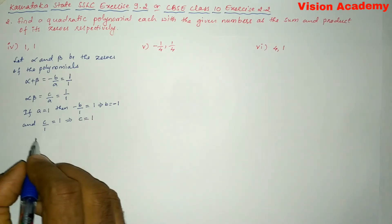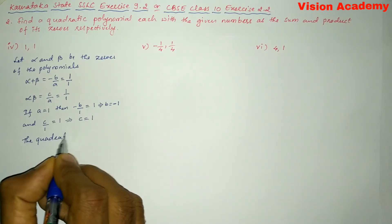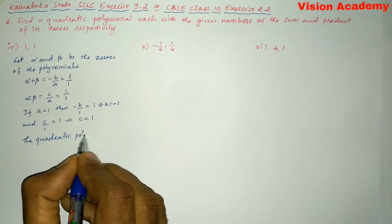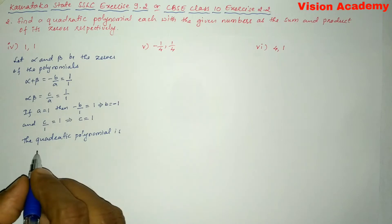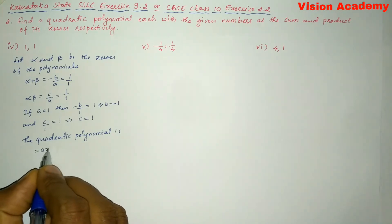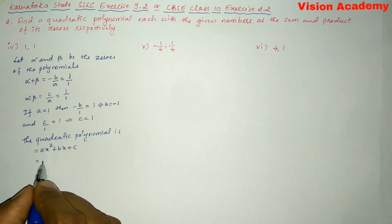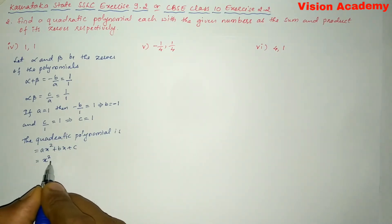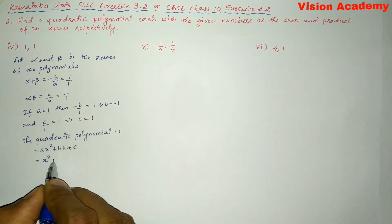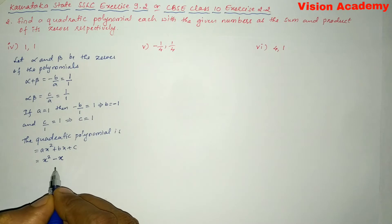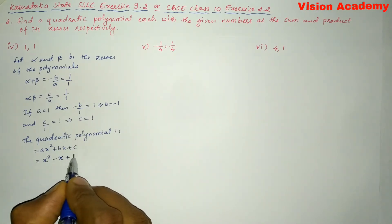Therefore, the quadratic polynomial is — general formula AX squared plus BX plus C. A is one, so X squared; B is minus one, so minus X; and C is one, so plus one. The polynomial is X squared minus X plus one.